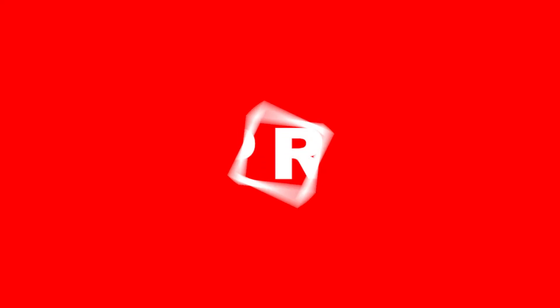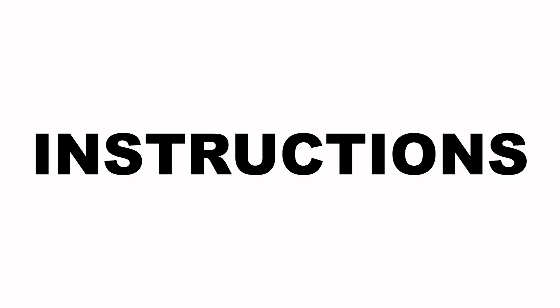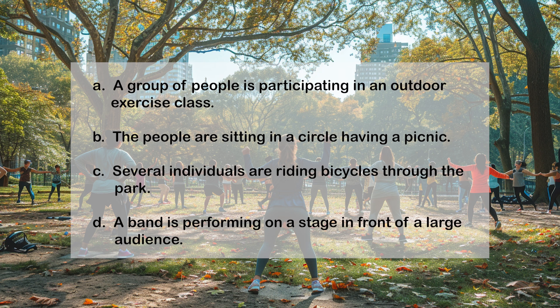Let's listen to it for a second time. You will see a photograph. You will hear four statements about the photograph. Choose the statement that most closely matches the photograph. A: A group of people is participating in an outdoor exercise class. B: The people are sitting in a circle having a picnic. C: Several individuals are riding bicycles through the park. D: A band is performing on a stage in front of a large audience. Answer: A — A group of people is participating in an outdoor exercise class.